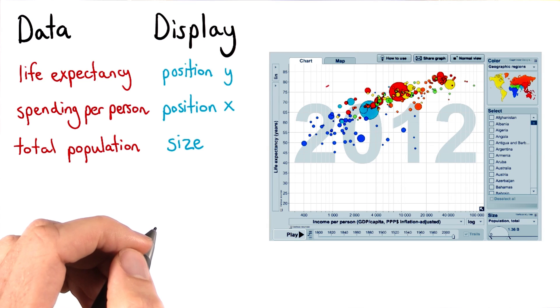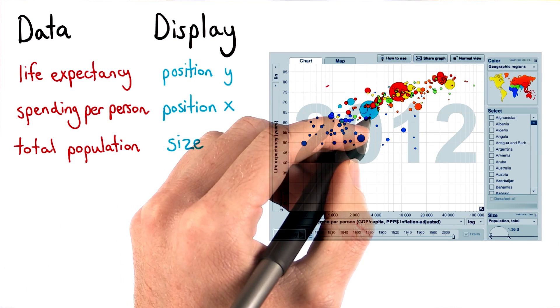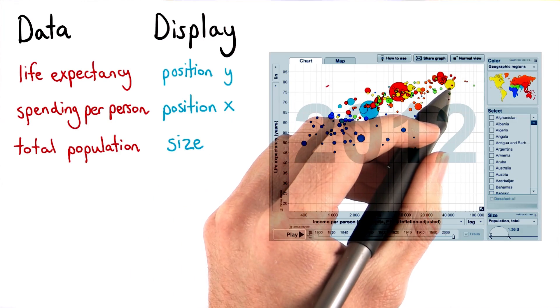In combination with color, the size attribute makes some countries more recognizable, such as India, China, and the United States.